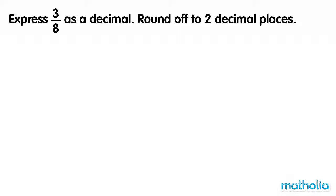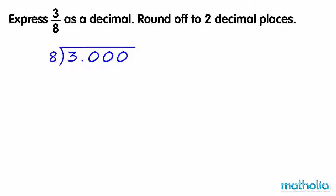To round off to two decimal places, we need to look at the digit in the thousandths place. So let's express three as three point zero zero zero.